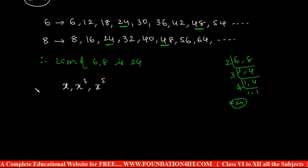So to find out the LCM of X, X cubed, X to the power five. X multiple is only X, X cubed even X power five also has X in it. X squared, X cubed, so the final is X power five. So X power five is the LCM of X comma X cubed comma X to the power five.